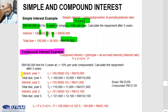Looking at the interest for year 1: the principal value is RM100,000 times 0.1, so the interest for the first year is RM10,000. At the end of year 1, the amount of money is RM110,000.